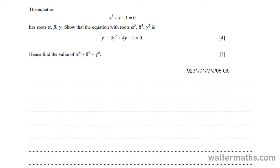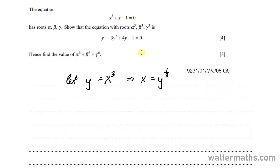We are going to use substitution to form the new equation. Since we have alpha, beta, and gamma being the roots and thus x values for the original equation, we can say let y be equal to x cubed, where x cubed now takes the form of the new roots. We can therefore make x the subject so that x comes out as y to the power of a third. Now we can substitute y to the power of a third into the original equation, so we now have in place of x cubed, that will be y to the power of a third cubed, and that's plus y to the power of a third minus 1 equal to 0. We can simplify by multiplying the powers here.